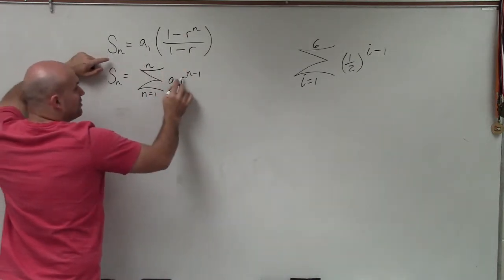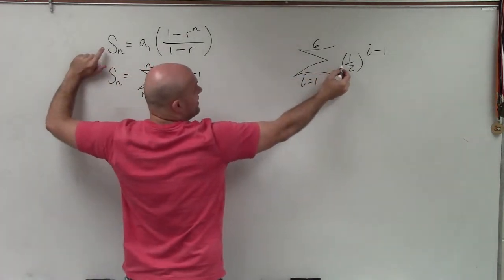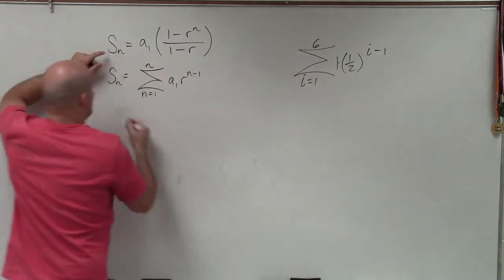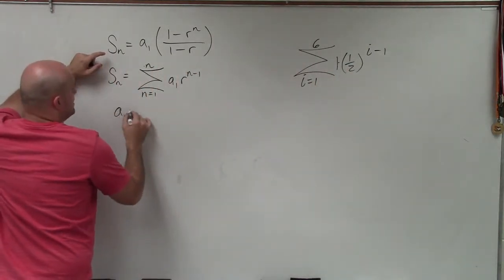Very good. So our a minus 1 is what's multiplied by the r, which in this case, we don't have anything. So we can see that's a 1. So I can say a sub 1 equals 1.